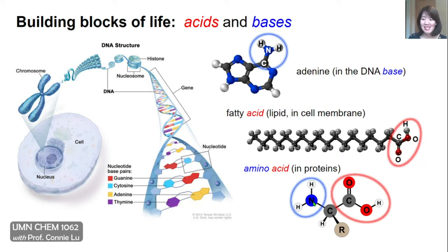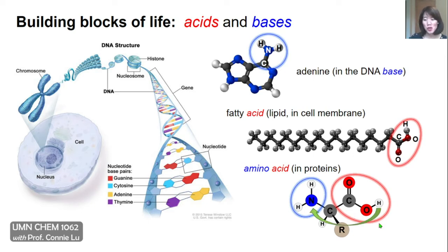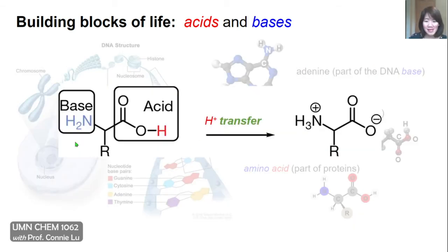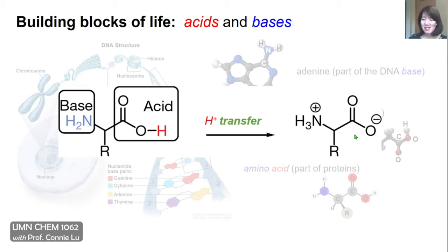Being able to recognize acids and bases helps you understand how they react and function in nature. Amino acids have both a basic and an acidic group, so you can do an internal proton transfer where the acidic proton moves to the base. The proton moves to the nitrogen, leaving a minus charge on the oxygen. When the proton moves to the nitrogen, it goes from neutral to a positive charge. Single amino acids are actually zwitterionic, meaning they have a split ion charge on both ends of the molecule.